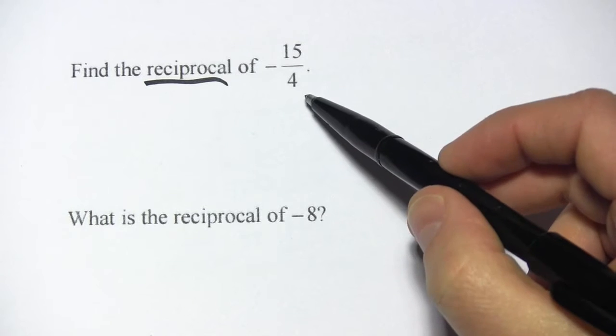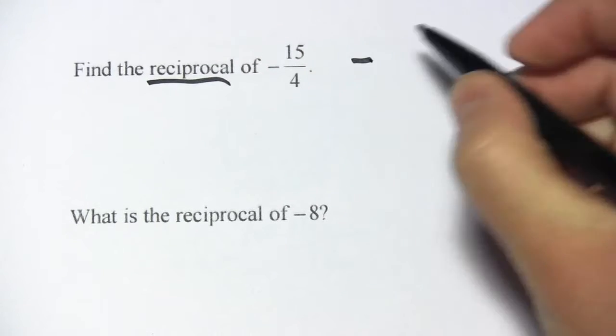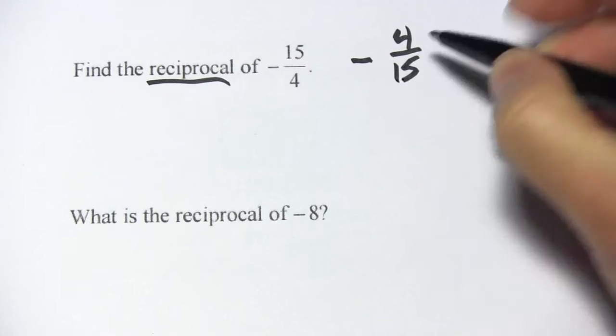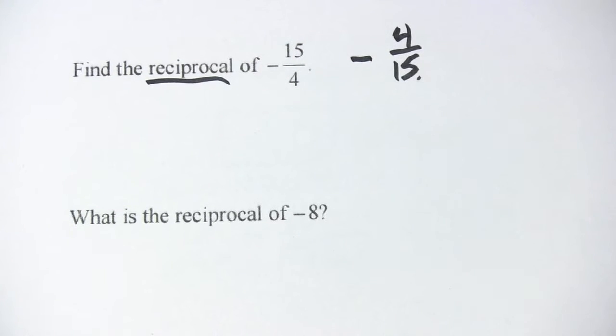So we've got negative 15 fourths here. We don't have to do anything with the negative sign, that stays. And then we just flip the top for the bottom and the bottom for the top. So this is 4 over 15. And now I've got the reciprocal.